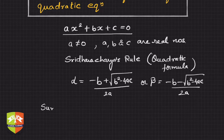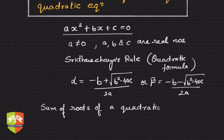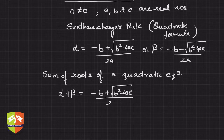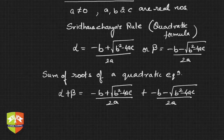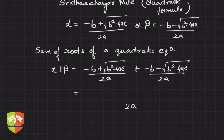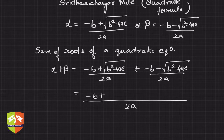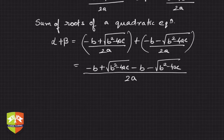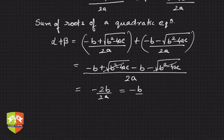Now let's find the sum of roots of a quadratic equation. Alpha + beta equals (-b + √(b² - 4ac)) / 2a plus (-b - √(b² - 4ac)) / 2a. Taking 2a as the common denominator on the right-hand side, we get (-b + √(b² - 4ac) + (-b - √(b² - 4ac))) / 2a. The square root terms cancel each other out, giving us -2b / 2a, which equals -b/a.